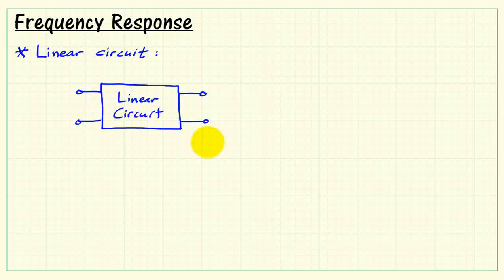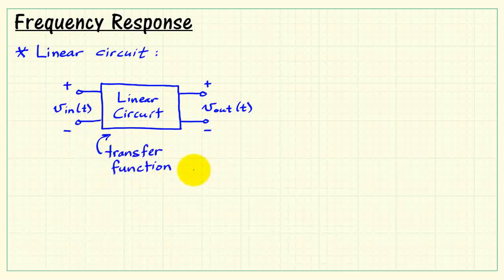Let's consider some basic principles of frequency response. We have a linear circuit with a pair of terminals for the input side, I'll call that V_in of t, and a pair of terminals on the output side, I'll call that V_out of t. So voltage signal goes in and the circuit produces an output voltage signal.